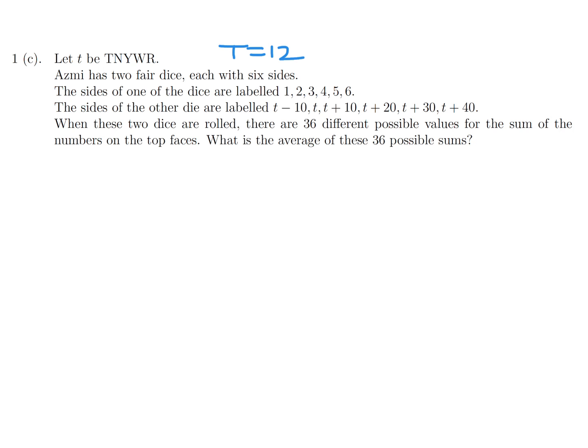T is 12. Azmi has two fair dice, each with six sides. The sides of one of the dice are labeled 1 through 6. The sides of the other are labeled t minus 10, t, t plus 10, t plus 20, t plus 30, t plus 40. When these two dice are rolled, there are 36 different possible values for the sum of the numbers on the top faces. What is the average of these 36 possible sums? So for the first one, the sum would be the sum of the sides, which is obviously 6 times that, because there's going to be six possible outcomes. Well, there's 36, and each of them is going to appear six times. So that's why the 1 will appear six times, the 2 will appear six times, and so on. So when you do this, this is 126.